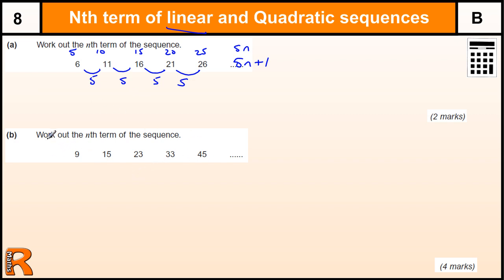Work out the nth term of this sequence, so what's it going up by each time? Well this one's going up by 6, and then 8, and then 10, and then 12. So that's not linear because it's increasing. Look at the differences between those numbers, and we do get a number that stays the same. It's going up by 2.